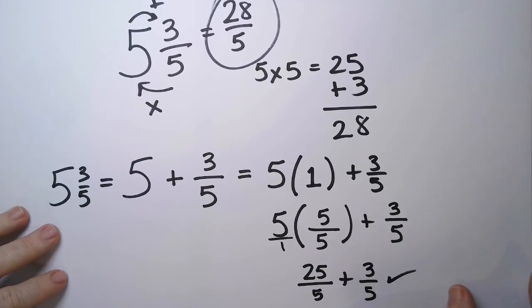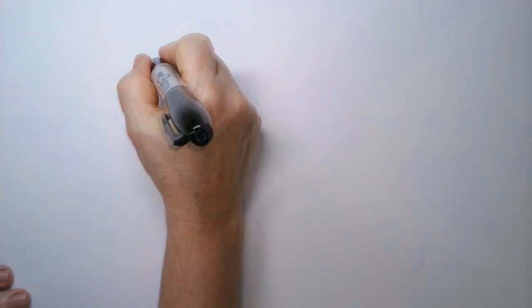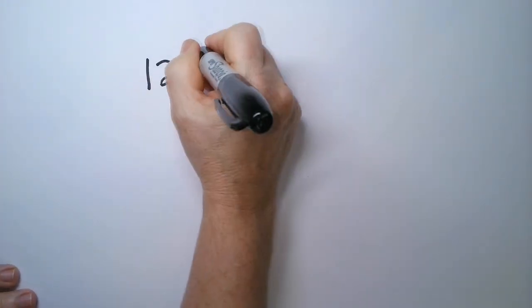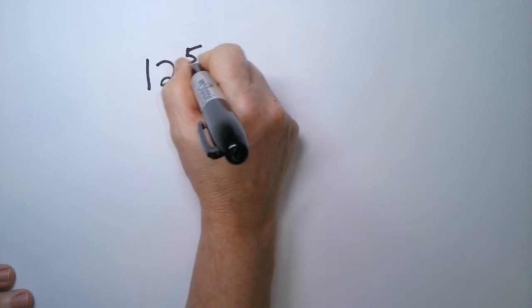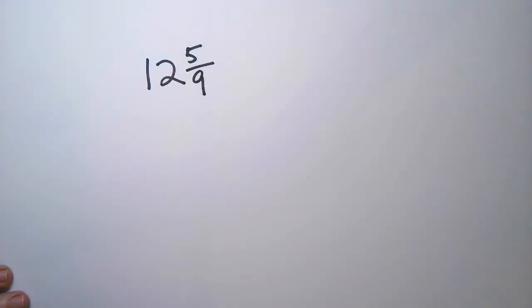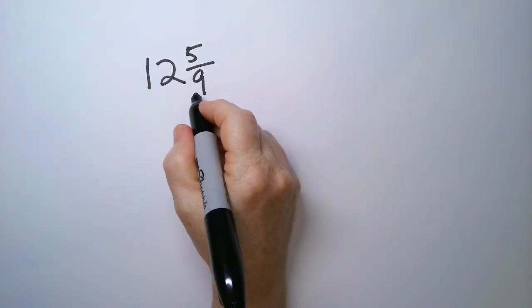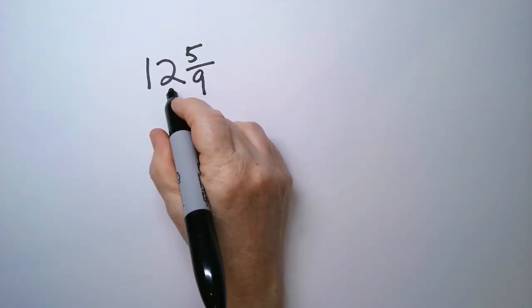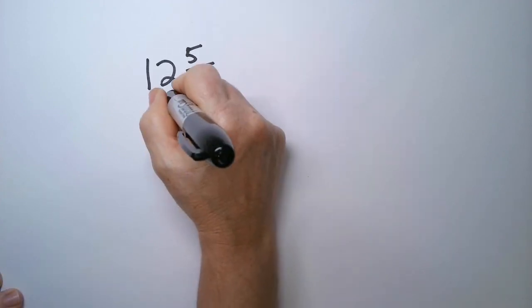Okay. Let's do one final one. Suppose I have 12 and 5 ninths. Okay? So, the first thing we're going to do is multiply 9 times 12. So, we have 108.